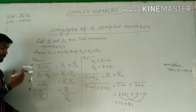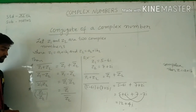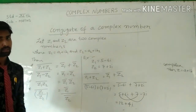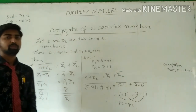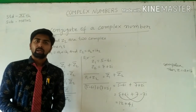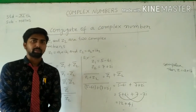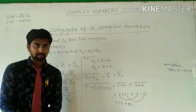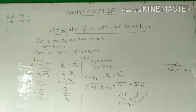In this way we can find the conjugate of Z1 plus Z2, the difference, the product, and the division of two complex numbers. I hope you are understanding. If you have any doubts, you can ask. Thanks, take care.